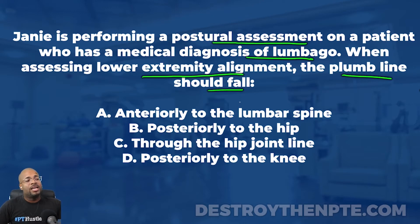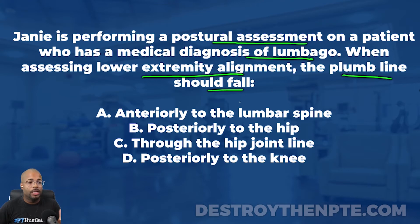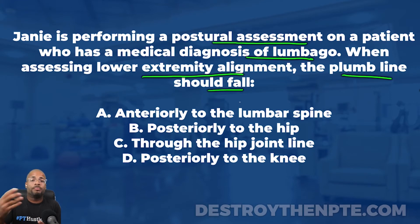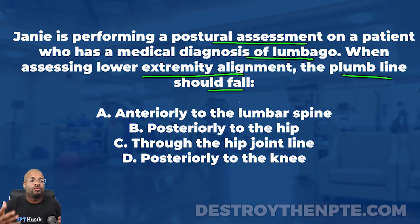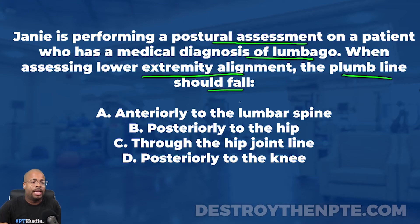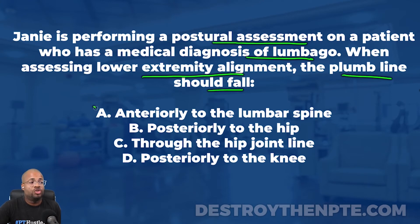Let's look at A: anteriorly to the lumbar spine. Should the plumb line fall anteriorly to the lumbar spine? This goes back to that patient care skills class. The plumb line is something we use to see where the line of gravity is falling during a postural assessment — great for determining forward head posture, thoracic kyphosis, and other postural abnormalities. Should it fall anteriorly to the lumbar spine? The answer is actually no. It should fall posterior to the lumbar spine. Put that in your notes.